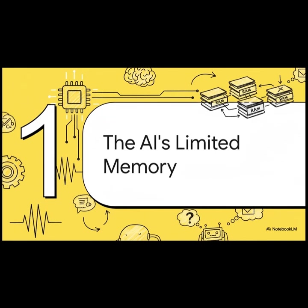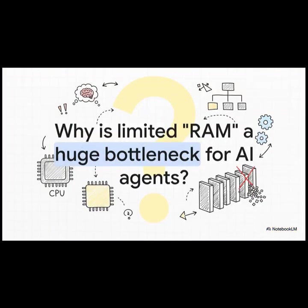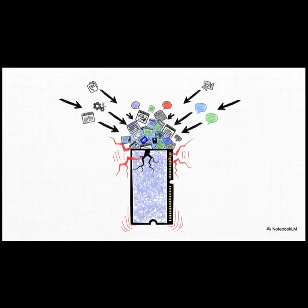That limitation brings us to the fundamental challenge we're trying to solve. The AI's limited memory isn't just some small quirk — it is a massive bottleneck that AI engineers are constantly wrestling with. Why is this finite context window, this limited RAM, such a huge problem when we're trying to build AI agents that can do really complex, long-running tasks? The problem boils down to one word: accumulation.